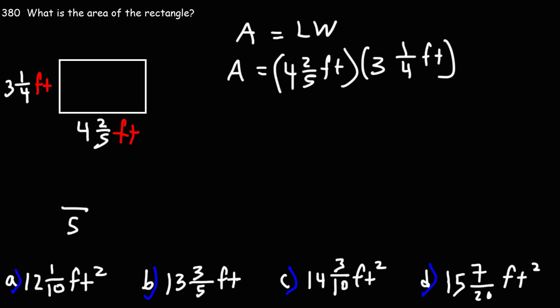The denominator will stay the same. To find the numerator, it's going to be 4 times 5, which is 20, plus 2. That's 22. So that's 4 and 2 fifths as an improper fraction.